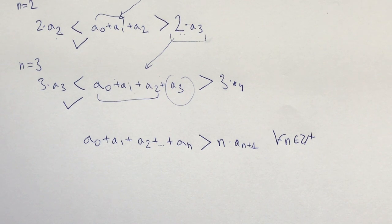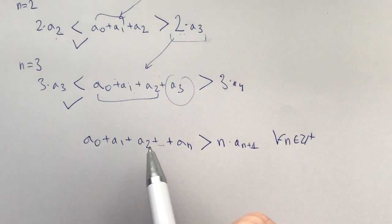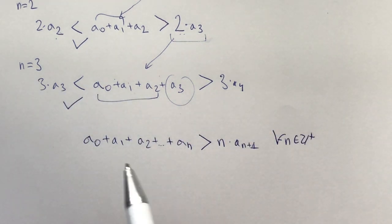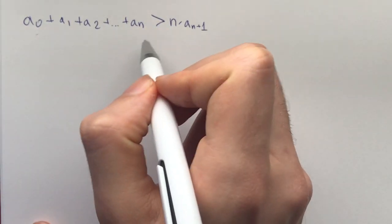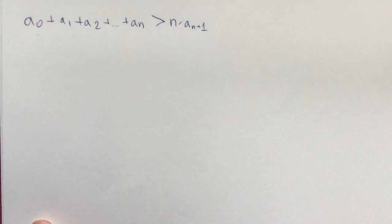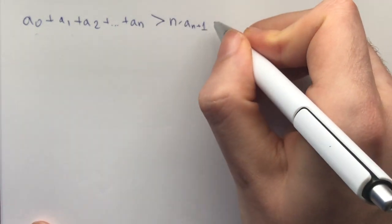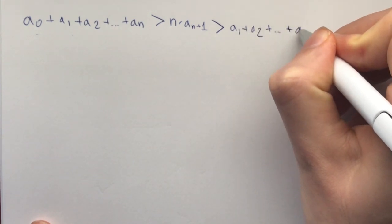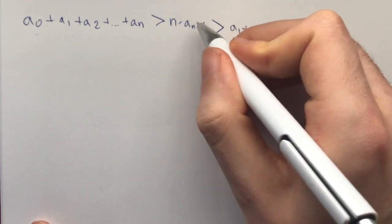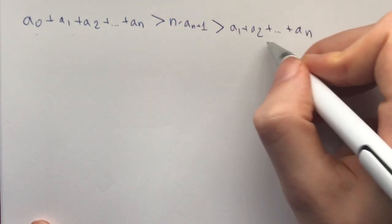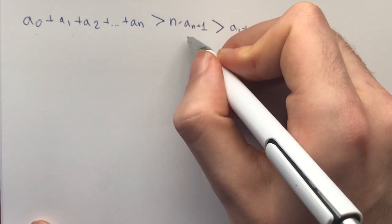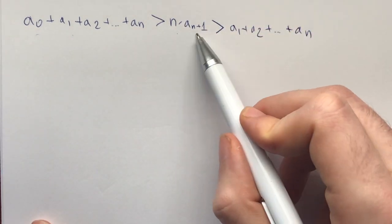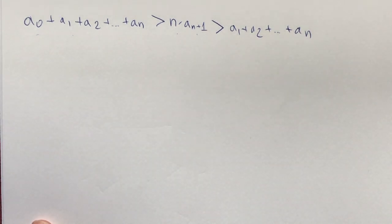While you're getting ideas, remember that this sequence a_0, a_1, a_2, ... is a strictly increasing sequence of positive integers. So we need a_0 plus a_1 plus ... plus a_n to be greater than n times a_{n+1}. But we also know that n times a_{n+1} is greater than a_1 plus a_2 plus ... plus a_n, because a_n is less than a_{n+1}, a_{n-1} is less than a_{n+1}, and so on. When you sum them all up, you get n times a_{n+1} greater than a_1 plus ... plus a_n.